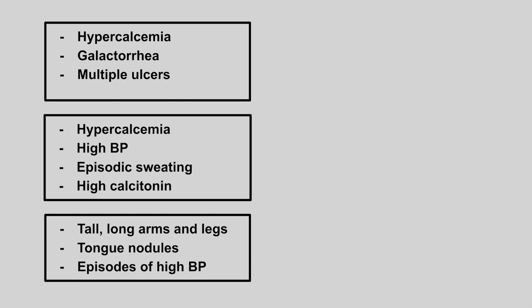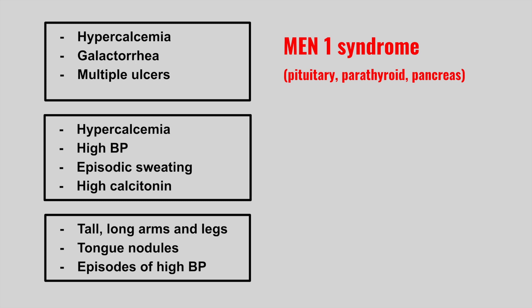The next patient has hypercalcemia, galactorrhea, and multiple ulcers. This is MEN-1 syndrome. Remember the three Ps: pituitary, parathyroid, and pancreatic tumors. The hypercalcemia arises from a parathyroid issue, galactorrhea signifies a prolactinoma from the pituitary, and multiple ulcers can be a gastrinoma.